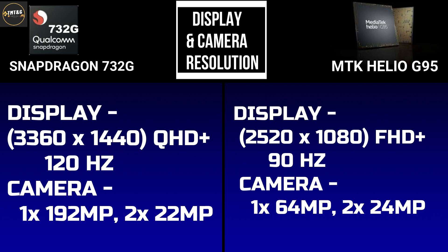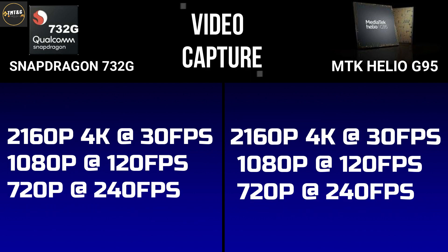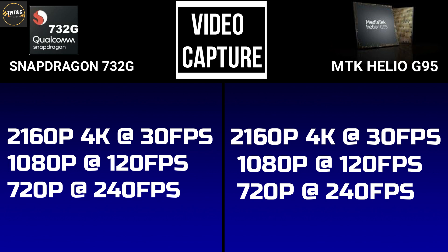Both the Snapdragon 732G and the Mediatek Helio G95 can record video at 2160p (4K) at 30 frames per second, 1080p at 120 frames per second, and 720p at 240 frames per second.